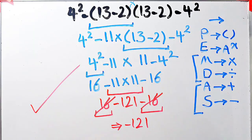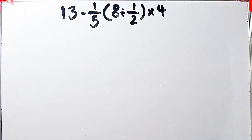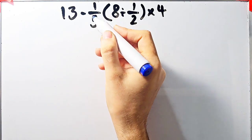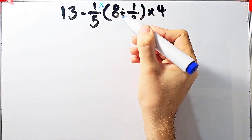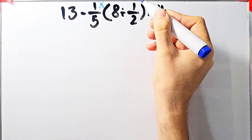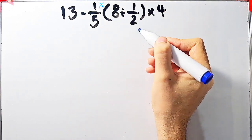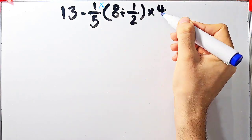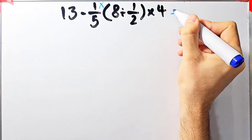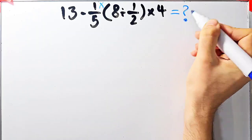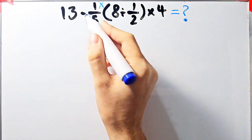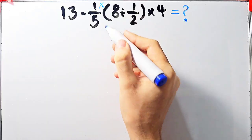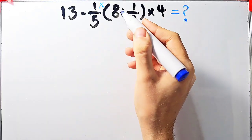Okay, if you're ready let's solve another question about PEMDAS rule. The question is: 13 minus 1 over 5, then times open parentheses 8 divided by 1 over 2 close parentheses, times 4. What is the answer of this question? In this question we have subtraction, multiplication, parentheses, and division.